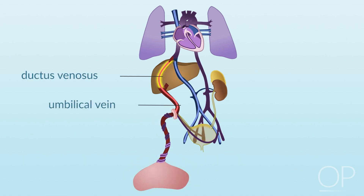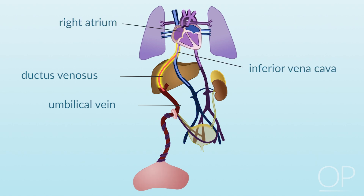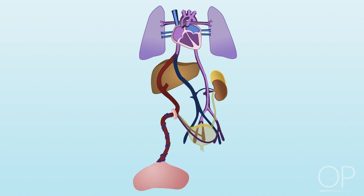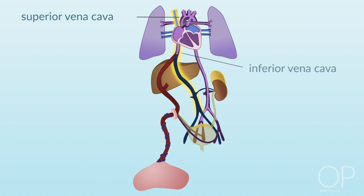Blood rich in nutrients and oxygen supplied via the placenta flows through the umbilical vein to the ductus venosus. Blood flows from the ductus venosus into the inferior vena cava up to the right atrium. This blood mixes with blood returning to the heart from the upper body via the superior vena cava and from the lower body via the inferior vena cava.